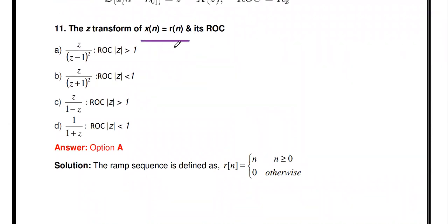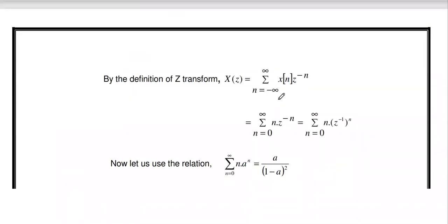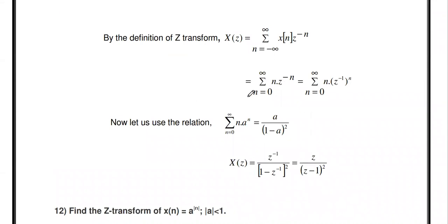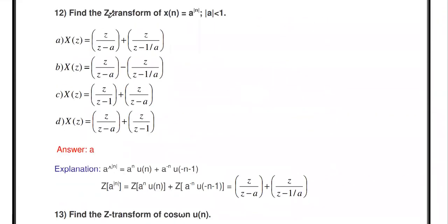Find the Z-transform of the ramp signal r[n] = n·u[n] and its ROC. The ramp is a linearly increasing signal. The Z-transform of the ramp is z/(z-1)², and the ROC is |z| > 1. The detailed solution is available in the lecture videos.